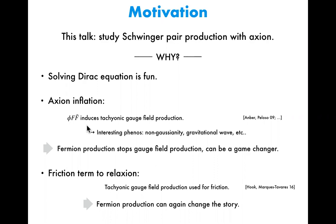If you think of this U(1) gauge field as the Standard Model gauge field, then of course there are fermions charged under this U(1) gauge field. Once this gauge field is produced, it will in turn produce the fermions. Once fermion production occurs, it will back-react to the gauge field production and may stop the gauge field production.